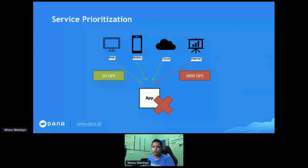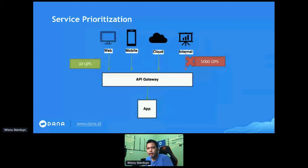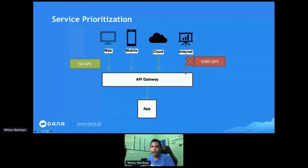How do we handle something like this? Using service prioritization. It is similar to rate limiting and throttling, but service prioritization not only focuses on how many incoming requests there are — it also checks the source of those requests. In this diagram, you can see that the API Gateway can set a different traffic policy for each device type. For example, internal traffic can be rejected immediately when it reaches a certain limit.